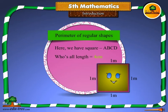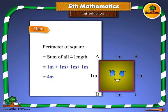Here we have square ABCD whose all lengths are equal to 1 m. Perimeter of square equals sum of all four lengths. After solving this, we get 4 meter.